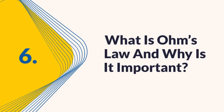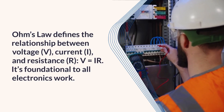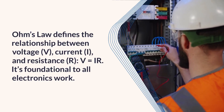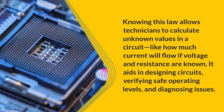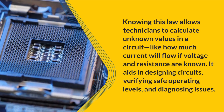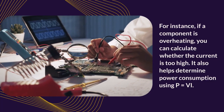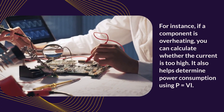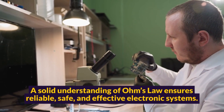Question 6: What is Ohm's Law and why is it important? Ohm's Law defines the relationship between voltage (V), current (I), and resistance (R): V = IR, and is foundational to all electronics work. Knowing this law allows technicians to calculate unknown values in a circuit, like how much current will flow if voltage and resistance are known. It aids in designing circuits, verifying safe operating levels, and diagnosing issues. For instance, if a component is overheating, you can calculate whether the current is too high. It also helps determine power consumption using P = IV. A solid understanding of Ohm's Law ensures reliable, safe, and effective electronic systems.